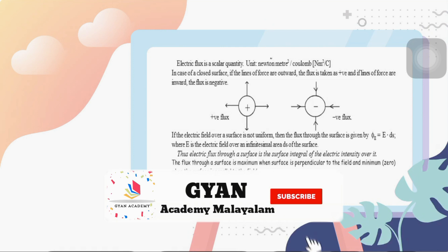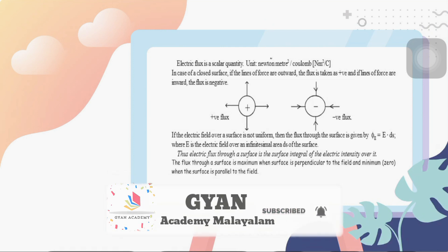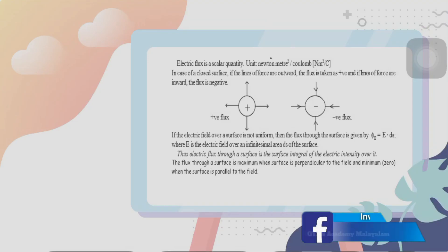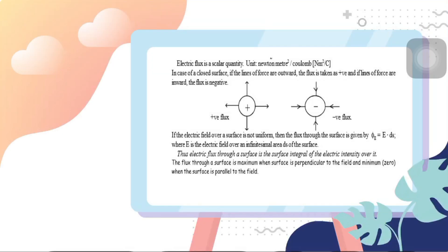In the case of a closed surface, lines of force going outward give a positive flux, and lines of force going inward give a negative flux. If the surface is not uniform, then the electric flux phi_E is equal to the integral of E dot dS, where dS is an infinitesimally small area element of the surface. The electric flux through a surface is the surface integral of electric intensity over it.